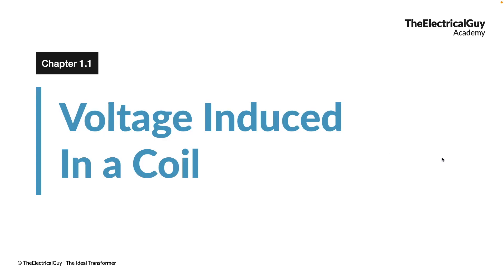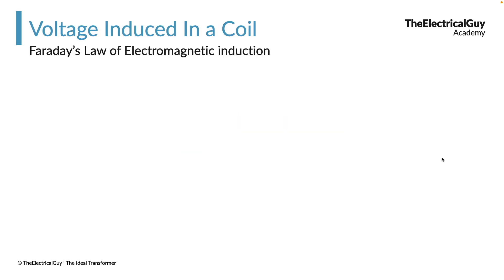To understand the ideal transformer, we first need to understand the basics — how the transformer works and on what principle it works. We will start with voltage induced in a simple coil, and first we understand Faraday's law of electromagnetic induction. This is very important because on this principle the transformer works, and not only the transformer — DC generators and induction motors all work on Faraday's law of electromagnetic induction.